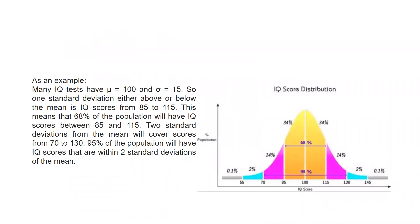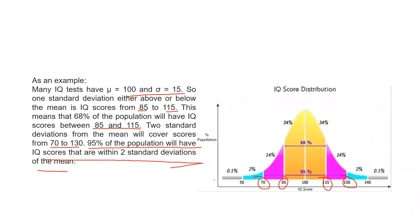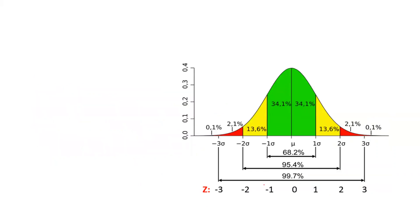Here is the IQ example shown on the curve. Mu — the mean — is 100, and the standard deviation is 15. So IQ scores from 85 to 115 represent 1 standard deviation above or below the mean, and 68% of the population will have IQ scores between 85 and 115. For 2 standard deviations, the range is 70 to 130, and 95% of the population will have IQ scores within this range. For 3 standard deviations, the range is 55 to 145, and 99% of the population falls within this range.